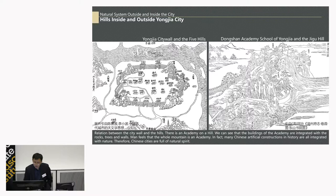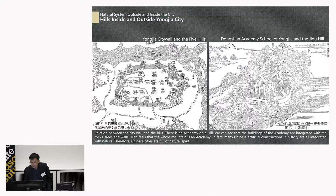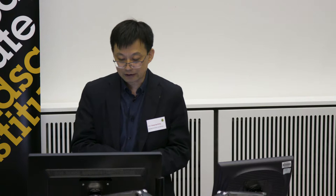Another very small town in this area is Yongjia. Here the city wall climbs over five hills, and one can climb over the hills to look out to the outside of the city. On one of the hills there is an academy, where the city walls are integrated with the rocks, the trees, and the wall together — one feels that the whole mountain is an academy. Actually, a lot of Chinese artificial constructions throughout history are integrated with nature — from buildings, hydraulic works, and agriculture, to even the cities themselves. Chinese ancient cities are full of natural spirit.